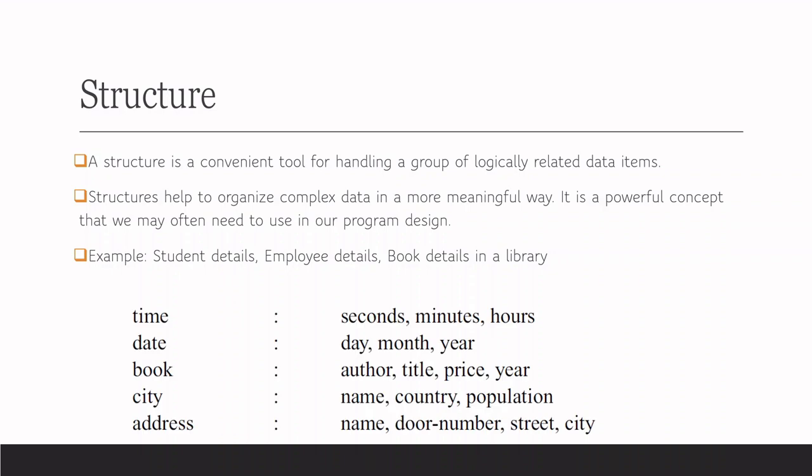If we need a time in a program, time consists of three parts: seconds, minutes, and hours. So you can include it as a structure. Structure time will have three elements — one is seconds, second is minutes, and the third one is hours. Just like that, if we make a date as a structure, it has three structure components or elements: day, month, and year.